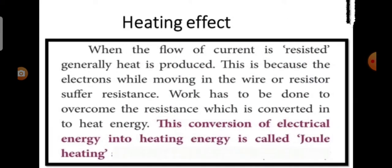When the flow of current is resisted, generally heat is produced. This is because the electrons while moving in the wire or resistor suffer resistance. Work has to be done to overcome the resistance, which is converted into heat energy. This conversion of electrical energy into heating energy is called Joule heating.